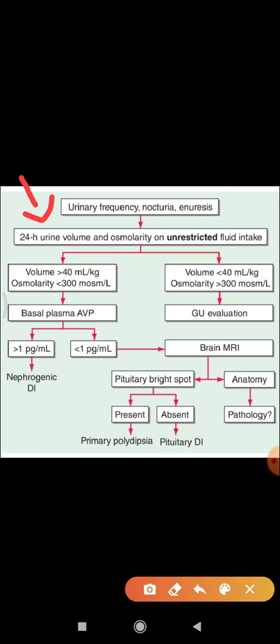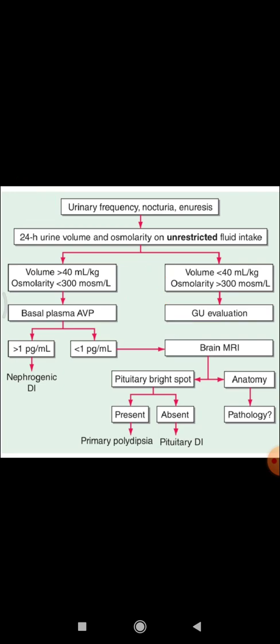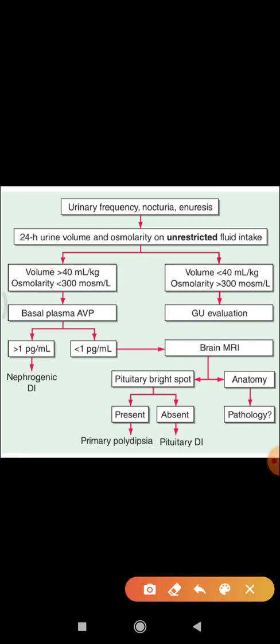If the urine volume is less than 40 mL/kg and osmolarity is greater than 300 mOsmol/L — that is, concentrated urine — then a genitourinary abnormality should be evaluated. Diseases of the genitourinary tract that can cause the above symptoms include benign prostatic hyperplasia, urinary tract infections, or bladder stones.